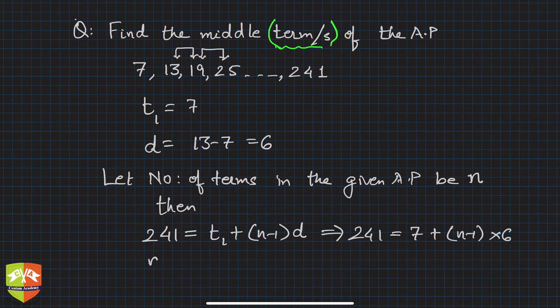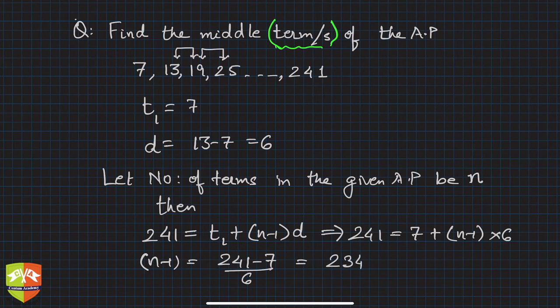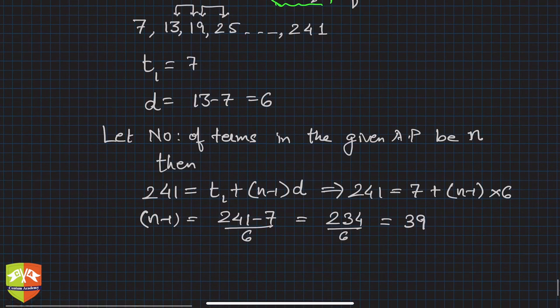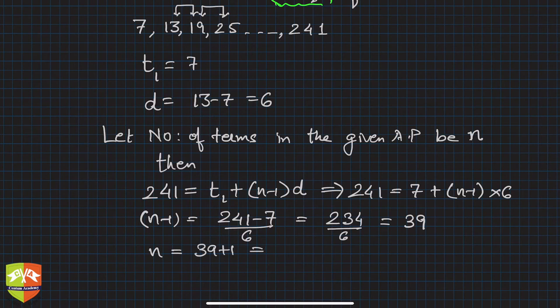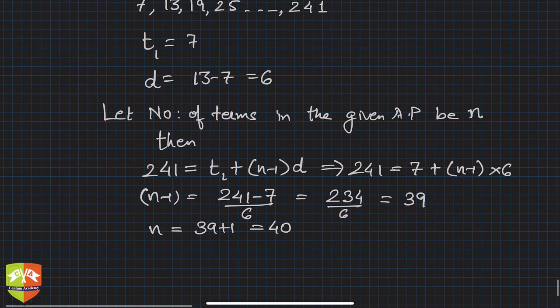That means n minus 1 will be simply 241 minus 7 upon 6, which is 234 upon 6, which is 39. So n minus 1 is 39, so what is n here? 39 plus 1 is 40. So n is 40.